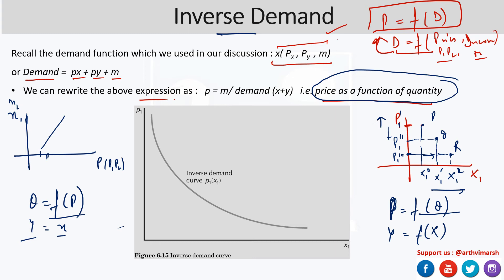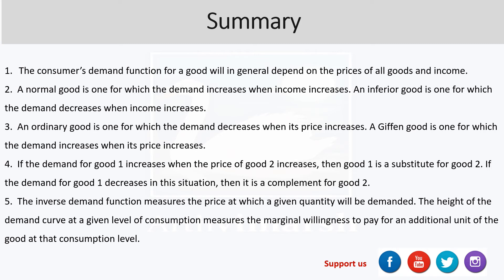To summarize this chapter: the consumer demand function depends on the prices of the good and the income of the consumer — that is, demand is a function of price and income — assuming other things remain constant. These are the main factors driving demand for a particular commodity or good.